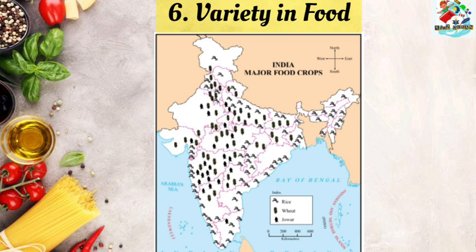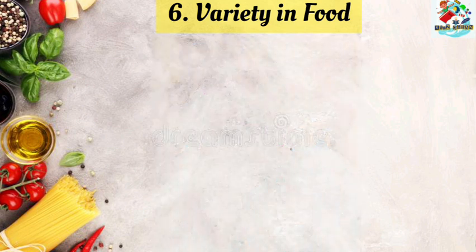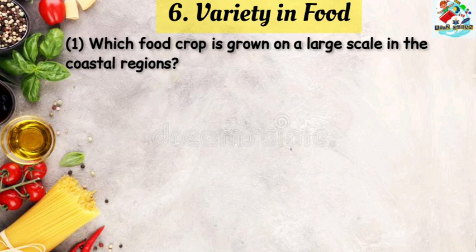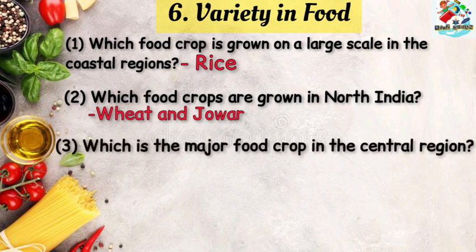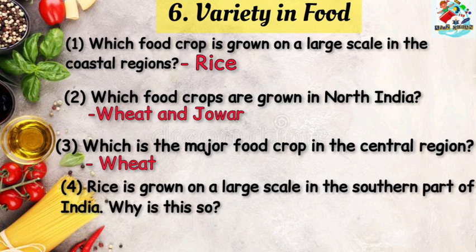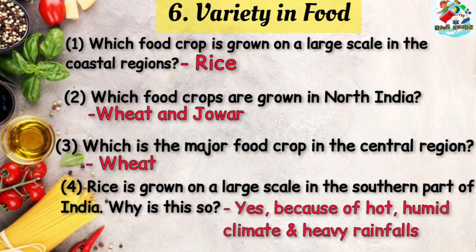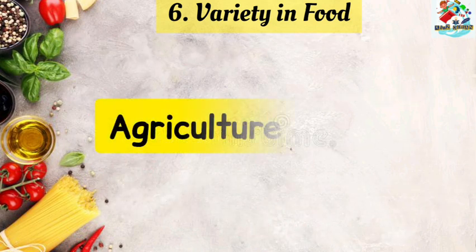Now let us study how the distribution of crops varies in different regions. Which food crop is grown on a large scale in the coastal regions? The answer is rice. Which food crops are grown in North India? The answer is wheat and jowar. Which is the major food crop in the central region? Wheat. Rice is grown on a large scale in the southern part of India. Why? Because of hot, humid climate and heavy rainfall.